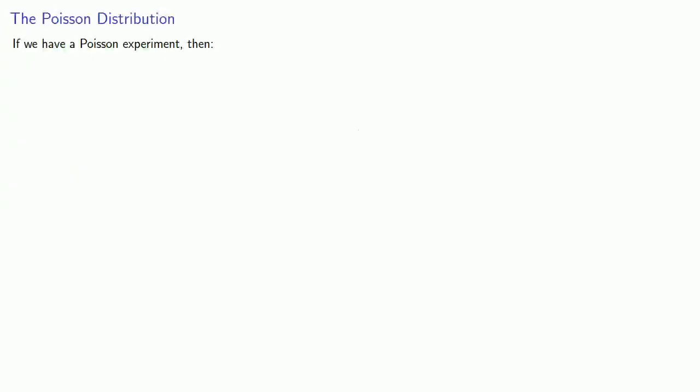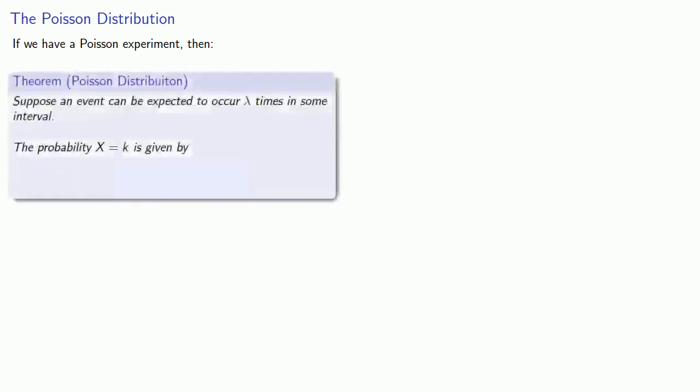Now, if we have a Poisson experiment, we can calculate the probability using a Poisson distribution. Suppose an event can be expected to occur lambda times in some interval. The probability x equals k is given by this formula.